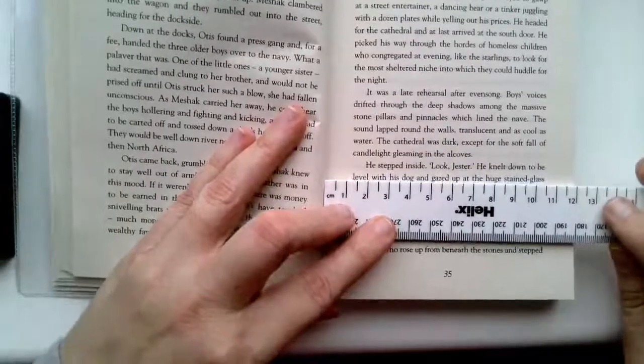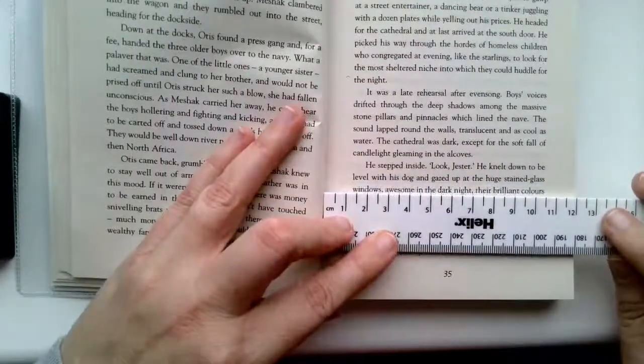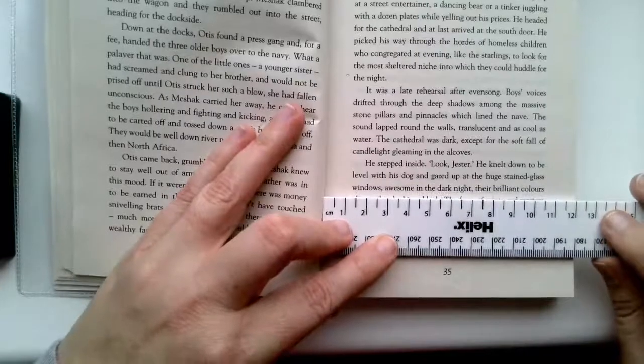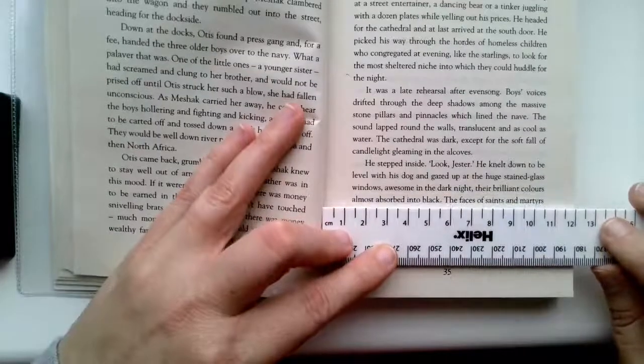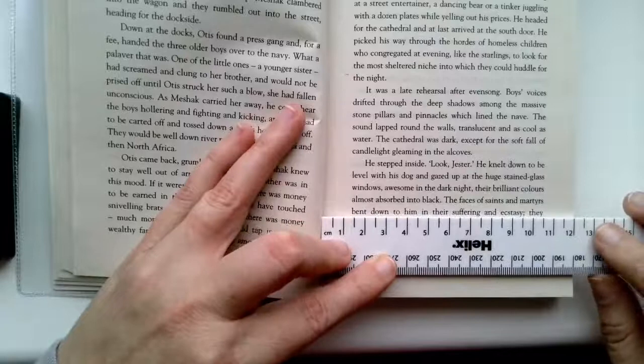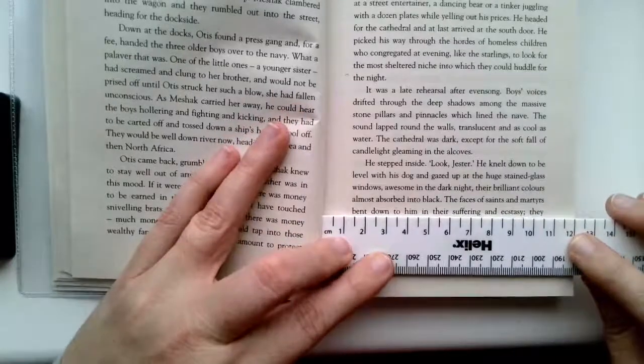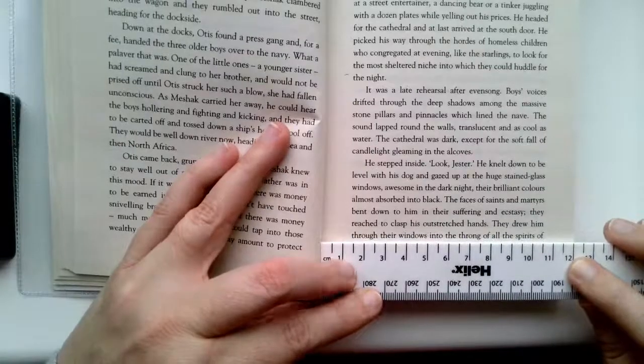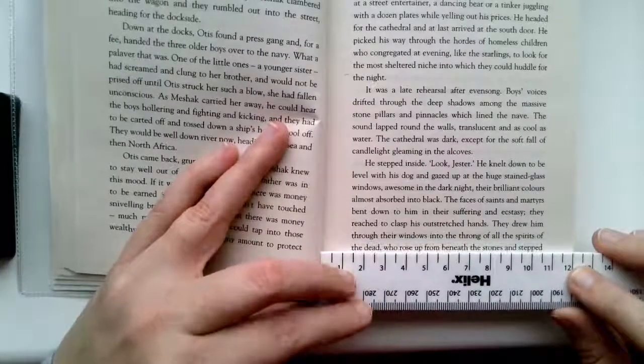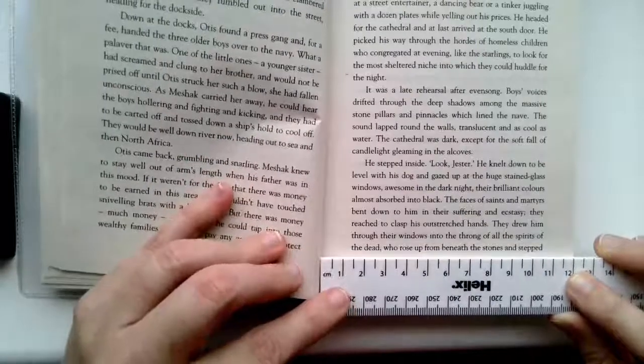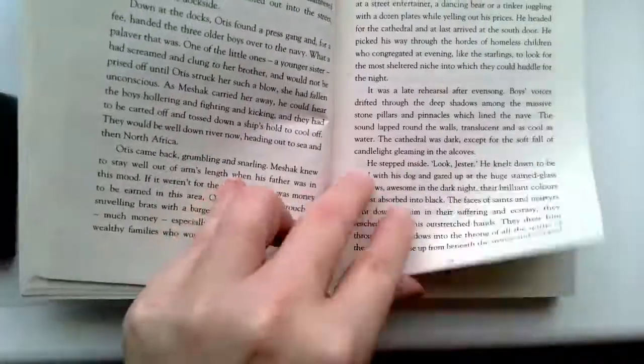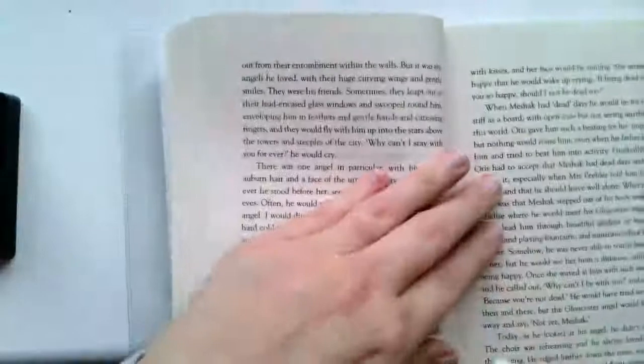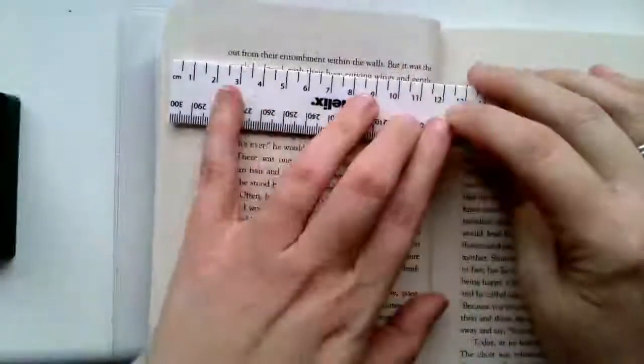He stepped inside. Look, Jester. He knelt down to be level with his dog and gazed up at the huge stained-glass windows, awesome in the dark night, their brilliant colors almost absorbed into black. The faces of saints and martyrs bent down to him in their suffering and ecstasy. They reached to clasp his outstretched hands. They drew him through their windows into the throng of all the spirits of the dead who rose up from beneath the stones and stepped out from their entombments within the walls.